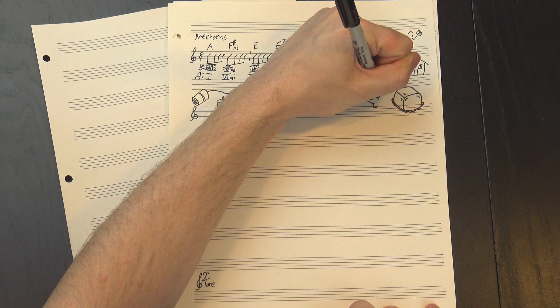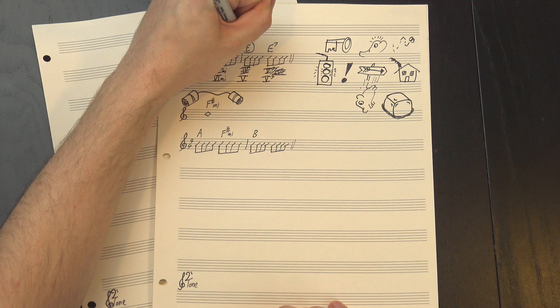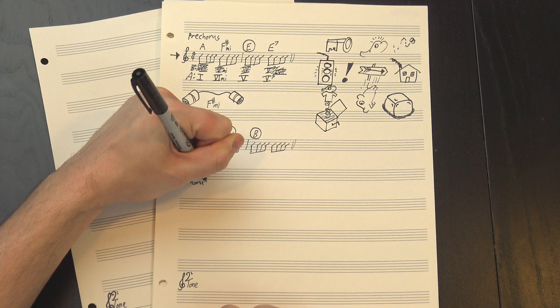Anyway, the E7 at the end really wants to resolve back to A, which it does with the second half of the section, which is the same as the first, except instead of going to the E, it suddenly jumps back to B major. This stands out because B major isn't in the key of A, but, again, it's prepared by the F-sharp minor. After that, we go through the verse and pre-chorus again, then finally wind up in the chorus.